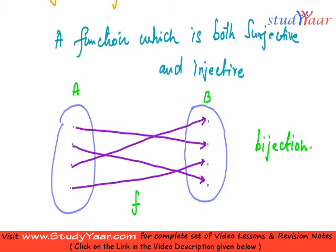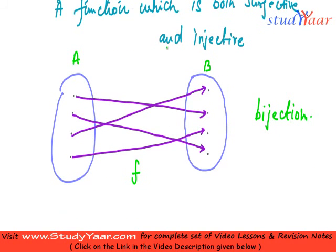In your bijective function, the cardinality of A is going to be equal to the cardinality of B.